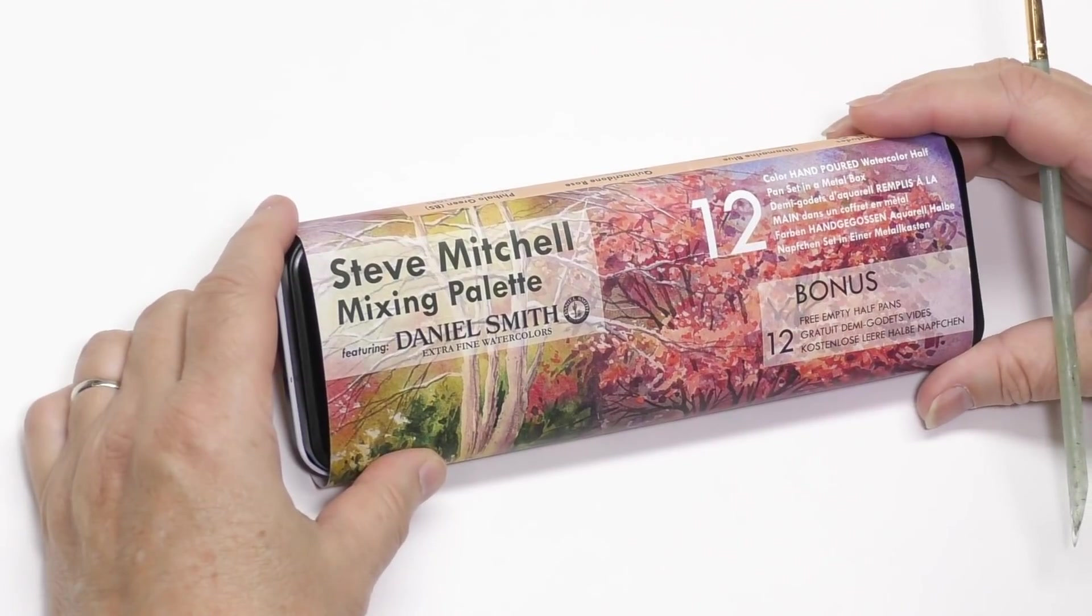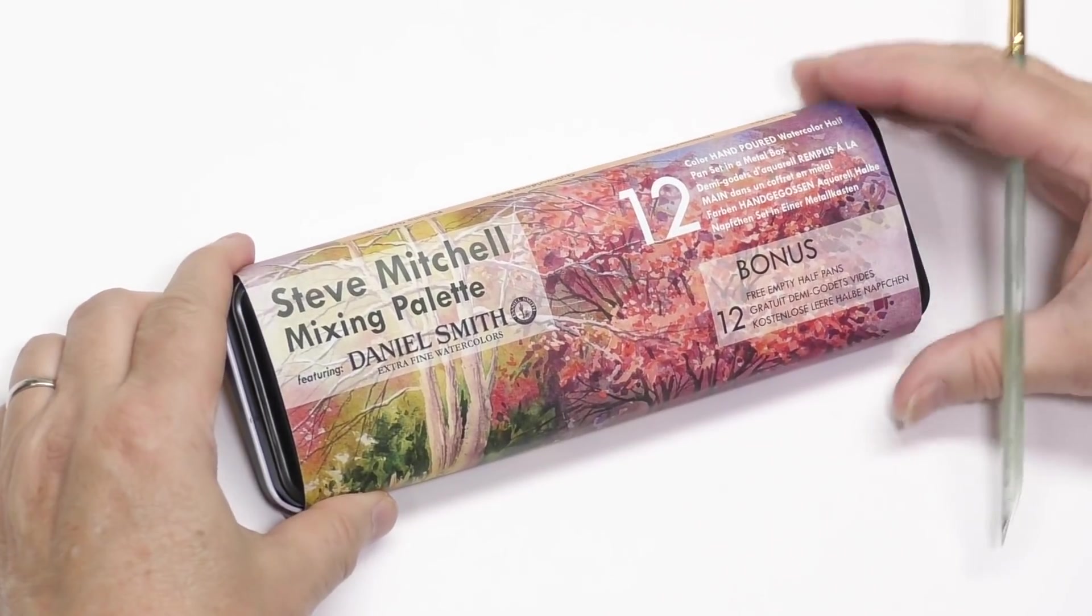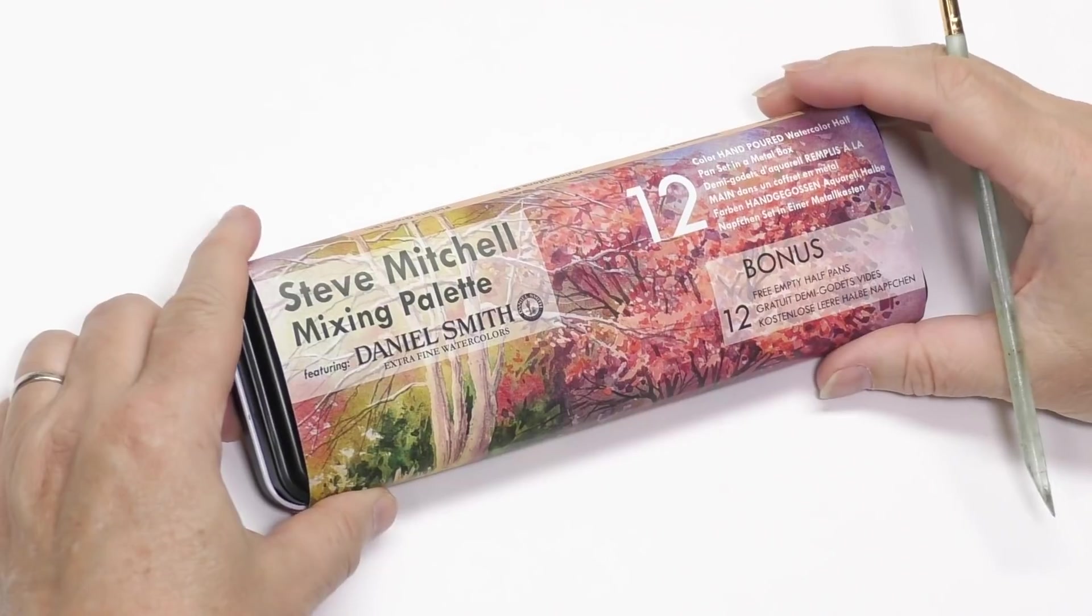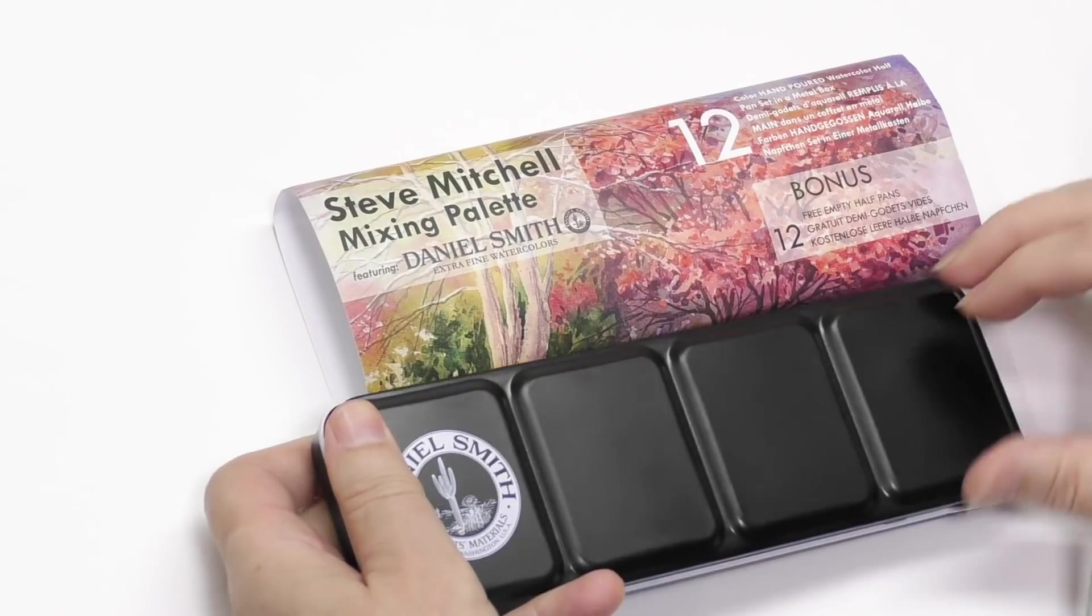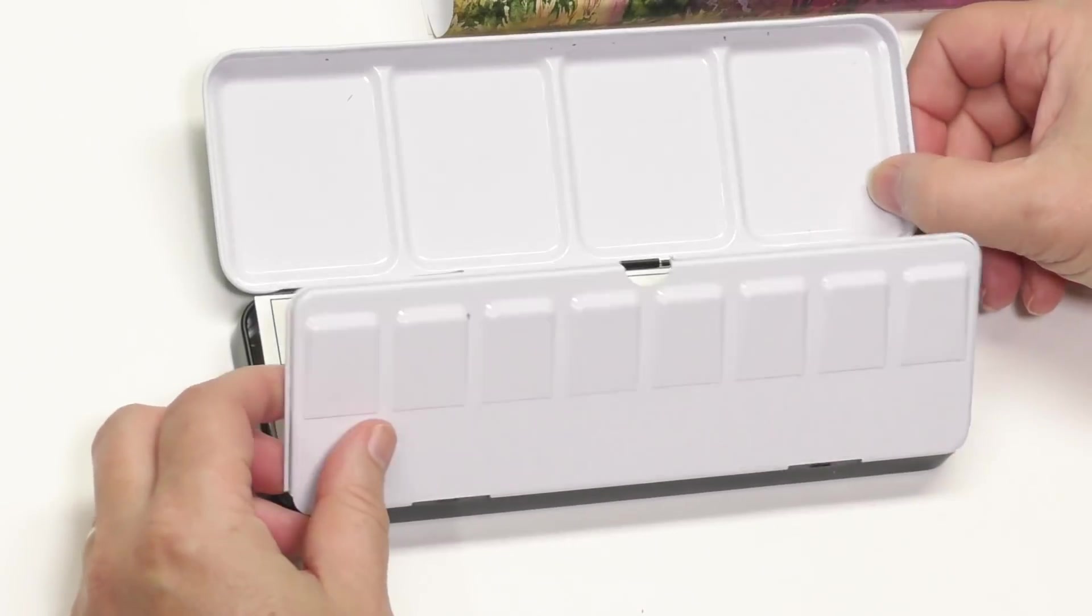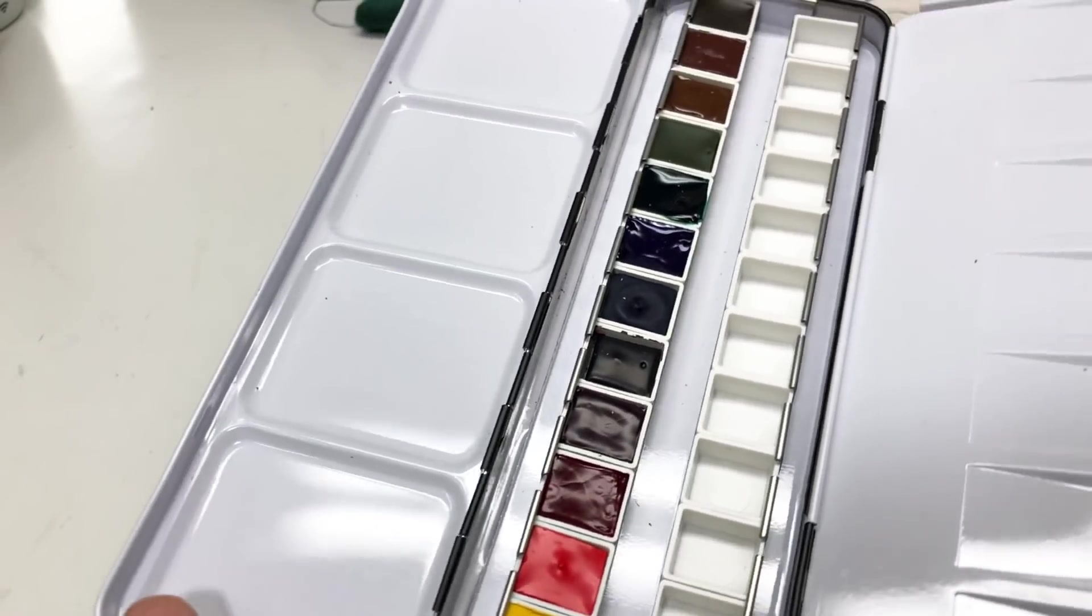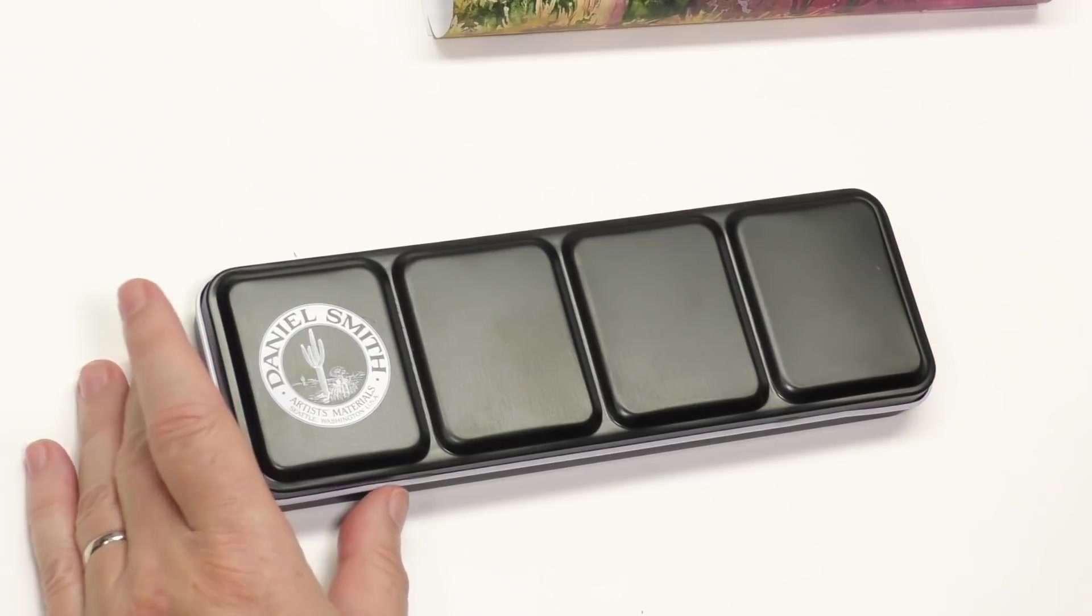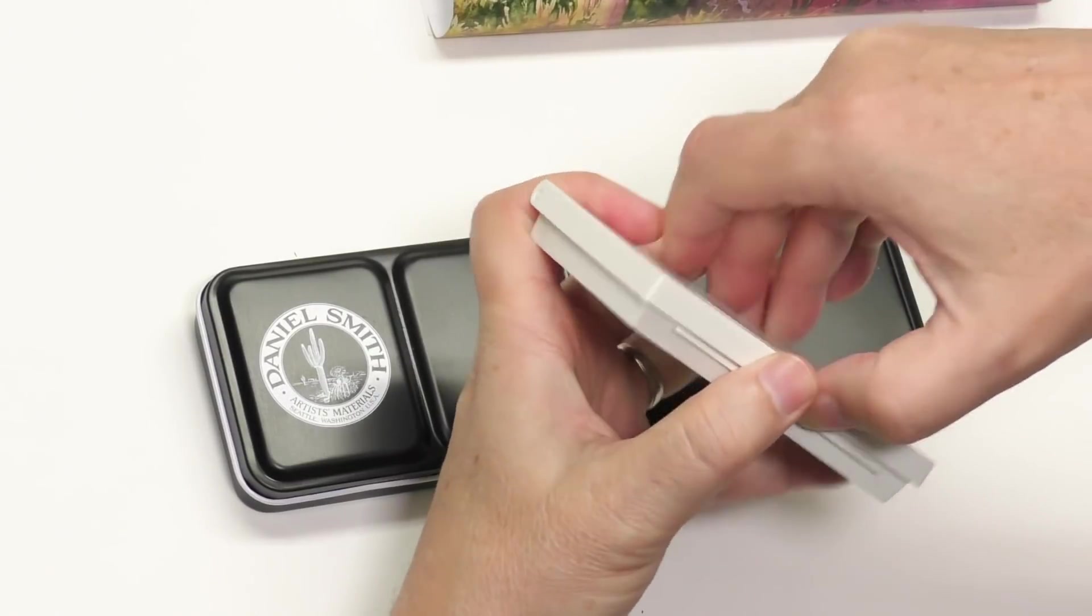Exciting times for me. This is a first. I'm not really one big on tracking down companies to produce supplies with my name on it. It's never been a goal. It's just kind of fun, but I probably lack a little initiative there. Anyway, this is a Daniel Smith, one of their new metal half pan palettes. Now, I guess a little over two years ago, maybe longer than that, Daniel Smith started hand pouring half pans. They don't produce the little solid half pans that you unwrap and stick in. They actually hand pour them.